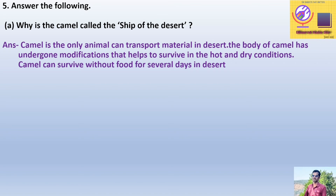Question 5A: Why is the camel called the 'ship of the desert'? Answer: The camel is the only animal that can transport material in the desert. The body of the camel has undergone modifications that help it survive in hot and dry conditions. The camel can survive without food and without water for several days in the desert. That is why the camel is called the ship of the desert.